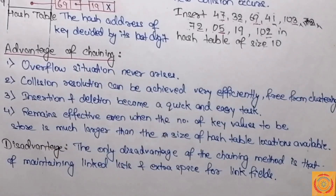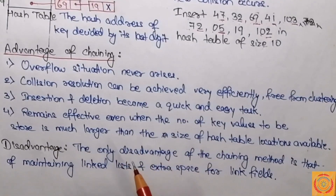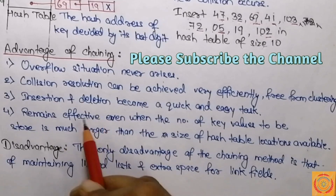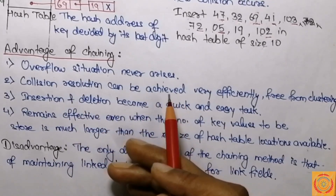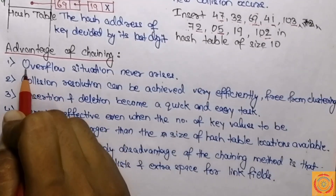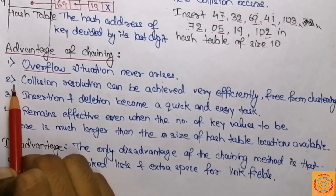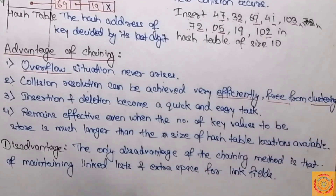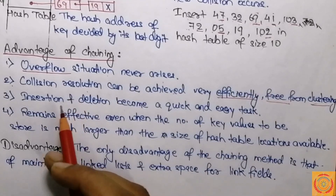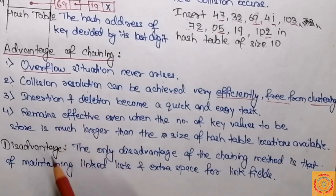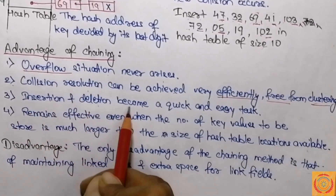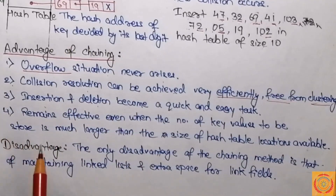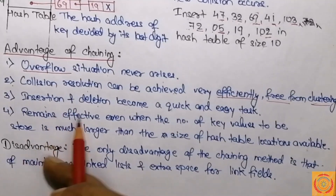There are several advantages of the chaining method. First, the overflow situation never arises because the hash table maintains linked lists which can contain any number of key values — there is no overhead of overflow. Second, collision resolution can be achieved very efficiently and this method is free from clustering, as we can easily map all elements using pointers. Third, insertion and deletion become quick and easy tasks in open hashing.